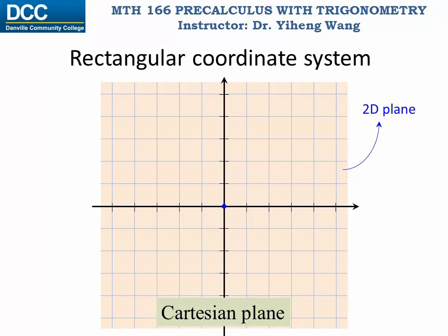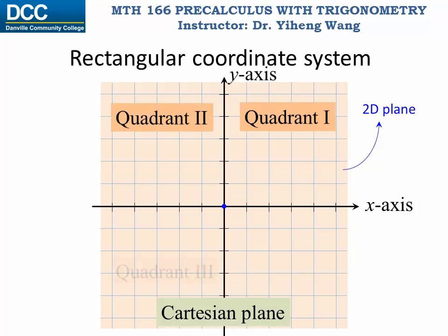The horizontal number line is known as the x-axis, and the vertical number line is known as the y-axis. The two lines divide the plane into four regions, and following a counterclockwise direction, these four regions are known as quadrant one, quadrant two, quadrant three, and quadrant four.